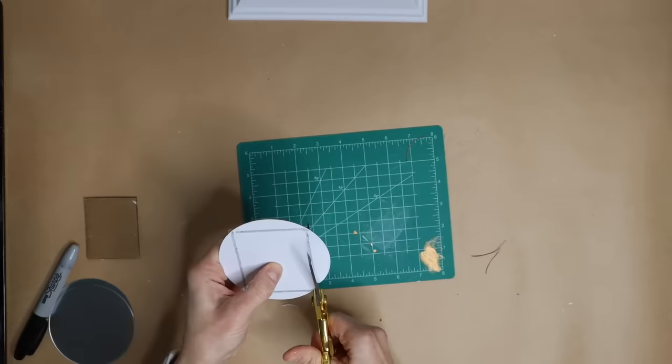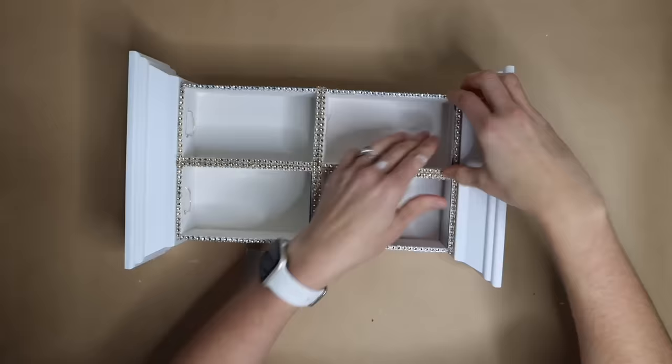Take craft mirror tiles, cut them to size, hot glue into place, and then remove the protective cover.